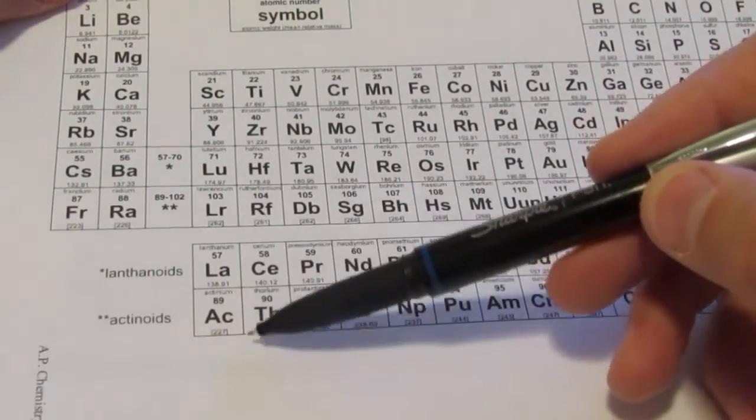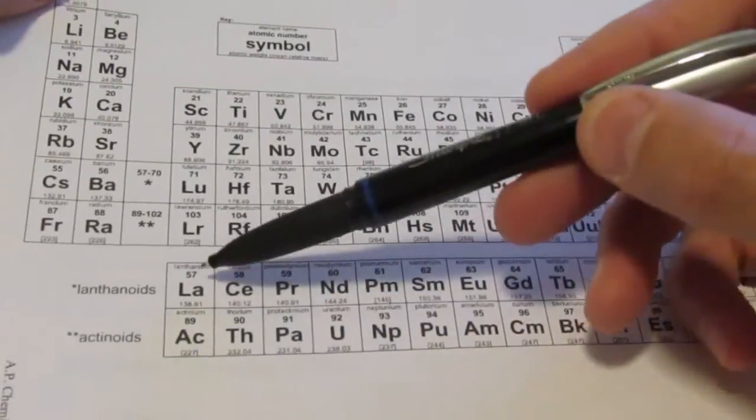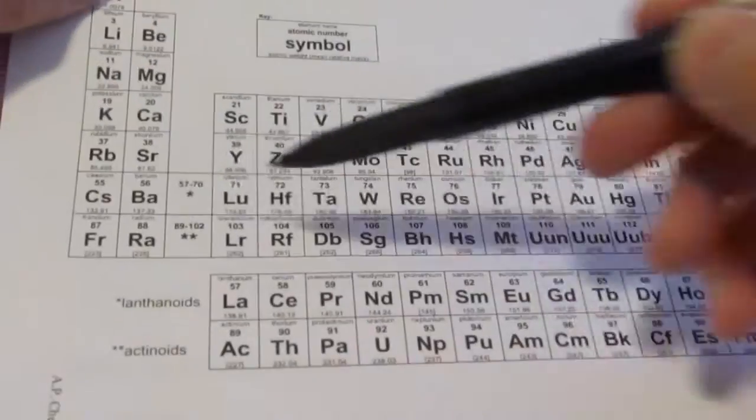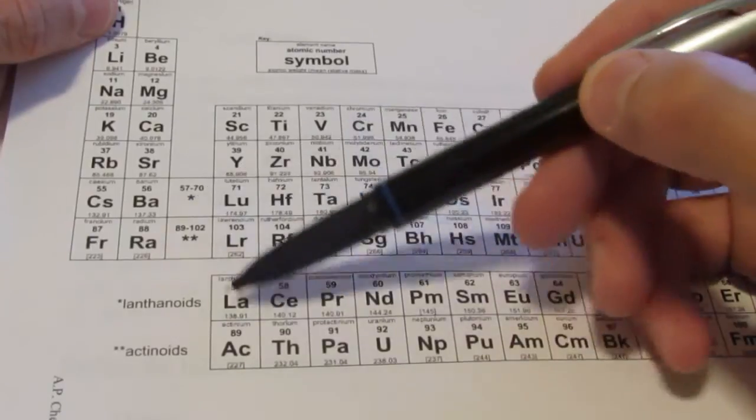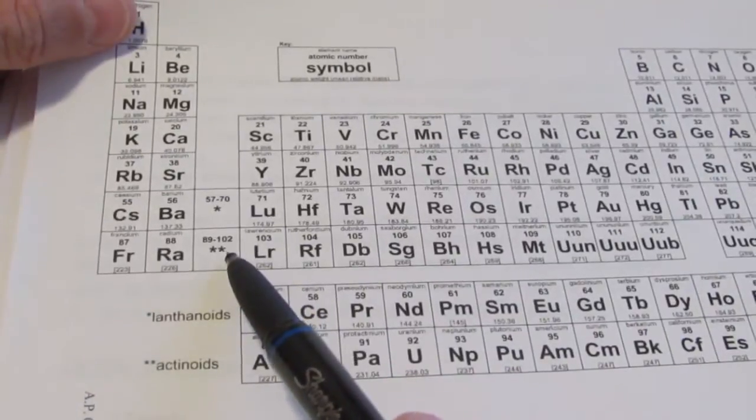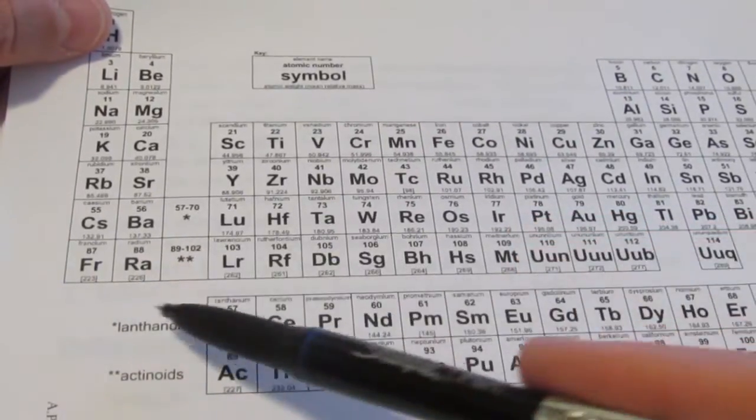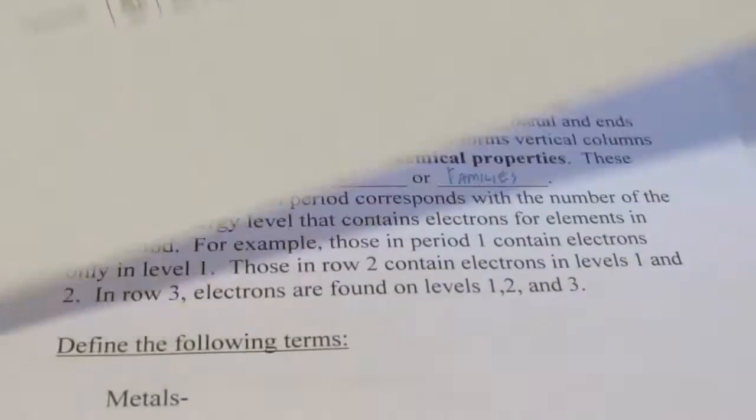Now keep in mind, these two bottom rows do not really count as individual rows. This row right here, the lanthanide series, belongs in this box. And this row right here, the actinide series, belongs in this box here. Of course, there's not enough room to squeeze them in there, so we add them at the bottom of the periodic table as footnotes.